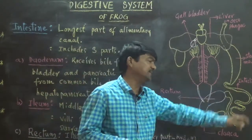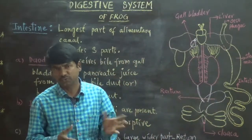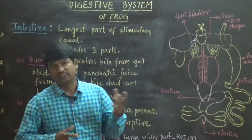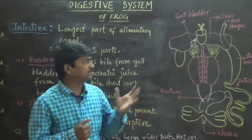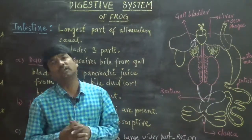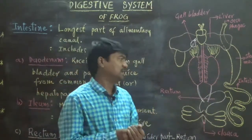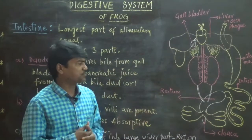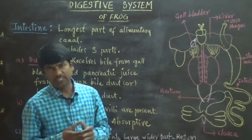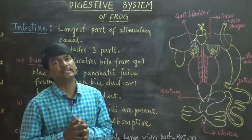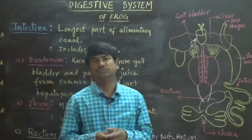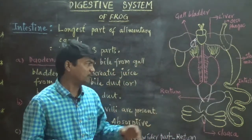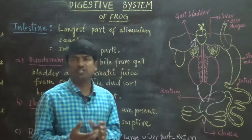The first part of the intestine is the duodenum, which is connected to the pancreas and gallbladder. From the gallbladder, bile is received through a common bile duct. The duodenum leads into the ileum, the middle part of the intestine. On the wall of the ileum, small finger-like structures called villi are present, which increase the absorptive surface area of the intestine. The ileum finally opens into the rectum.